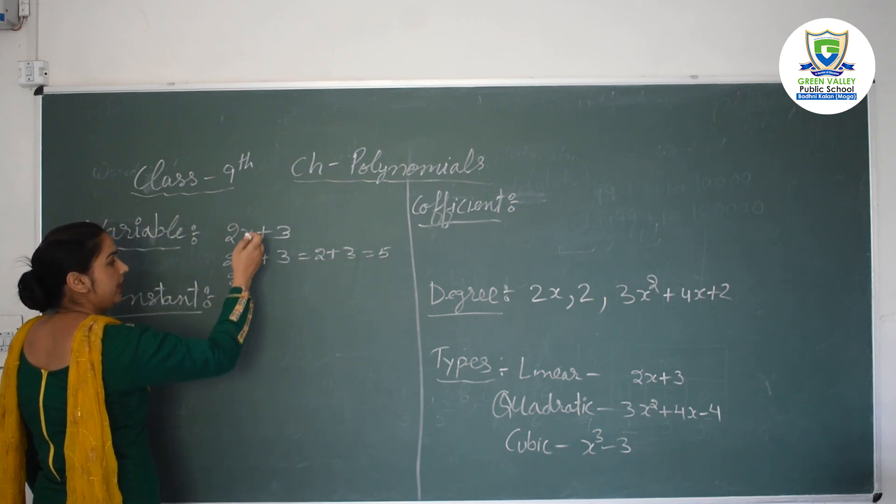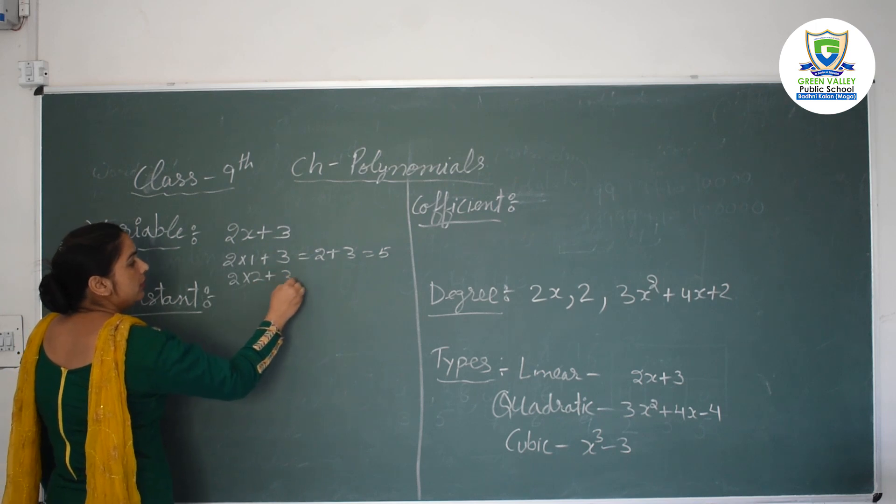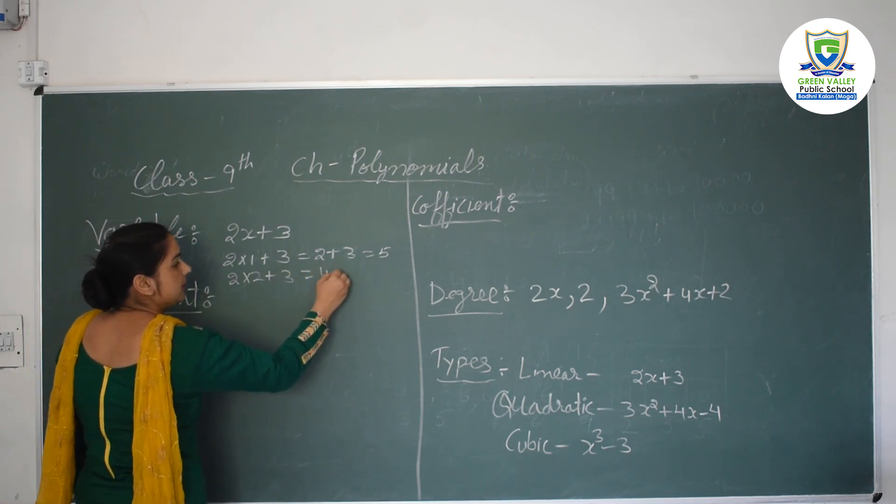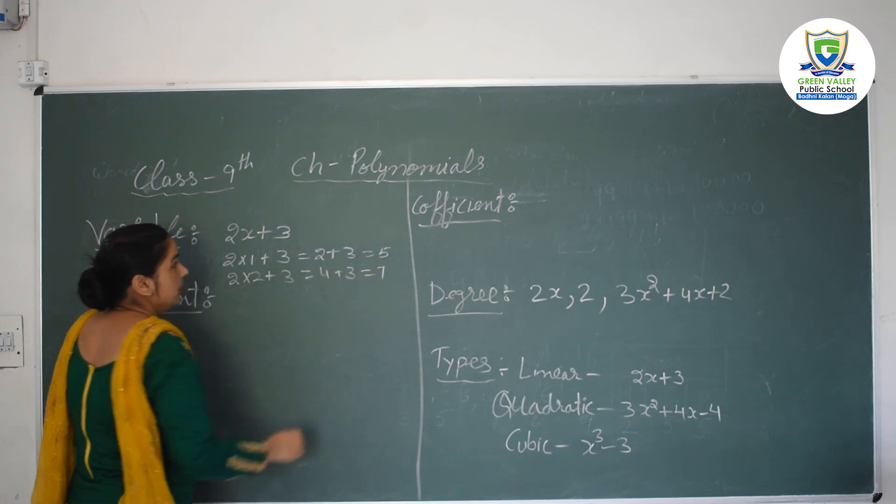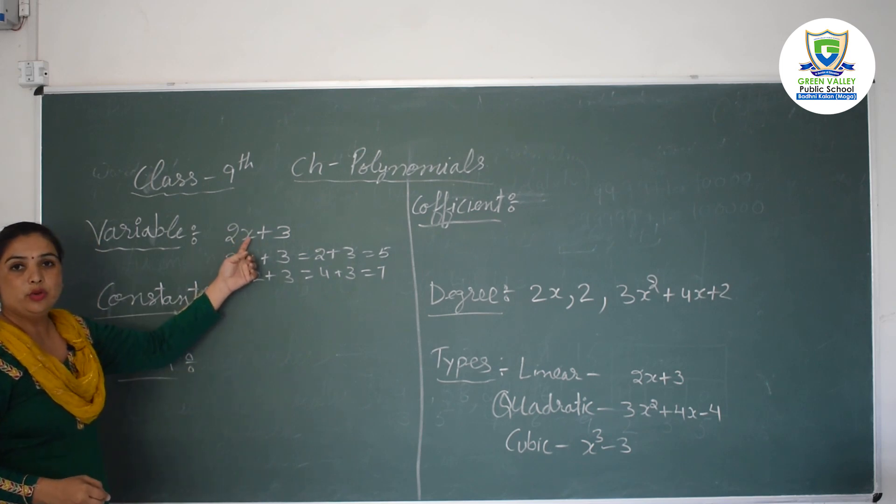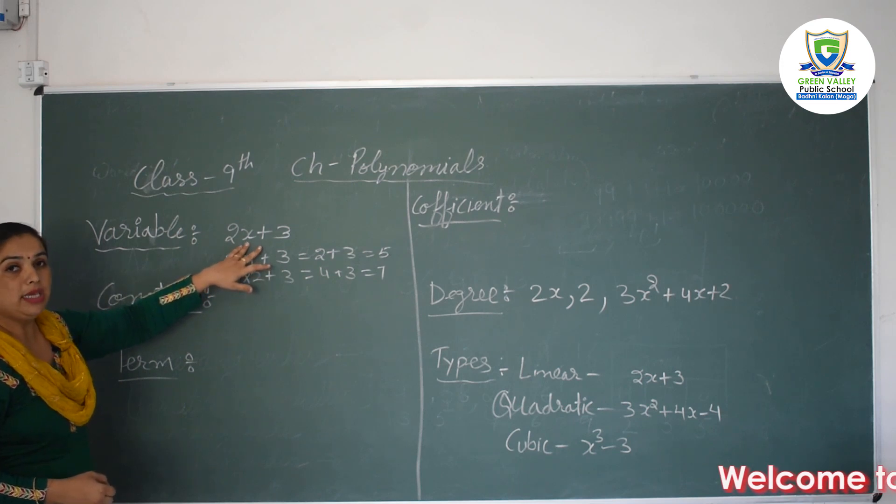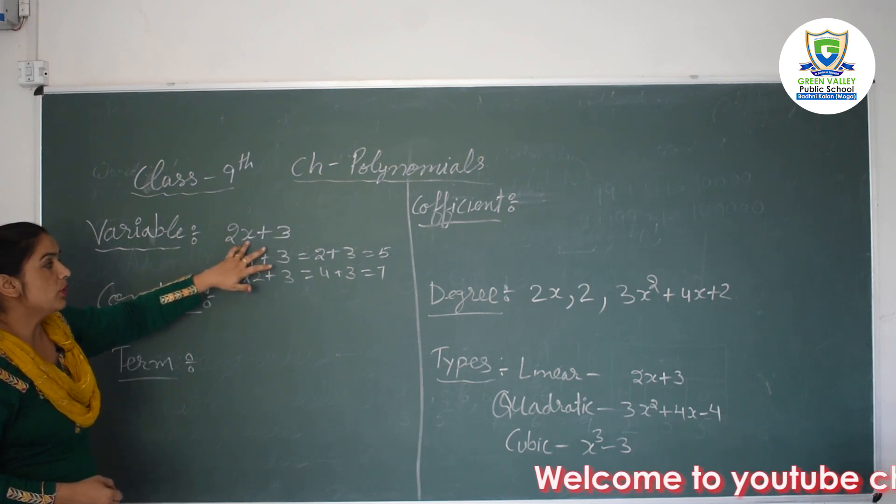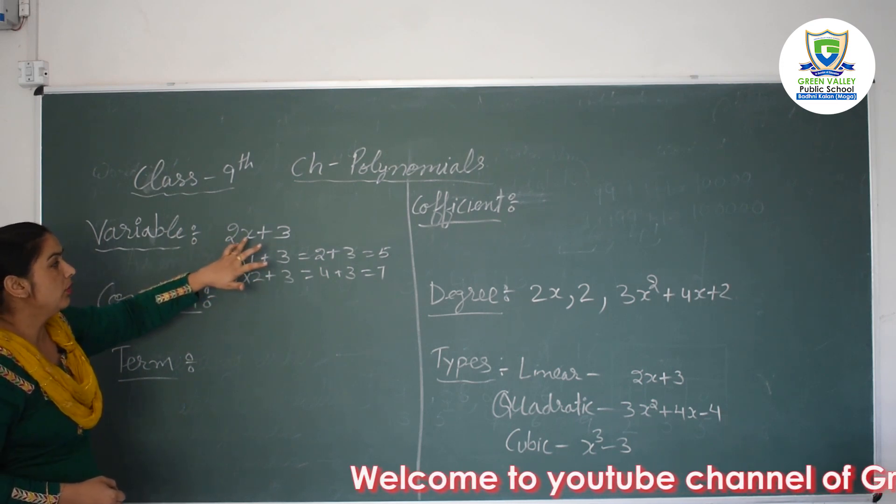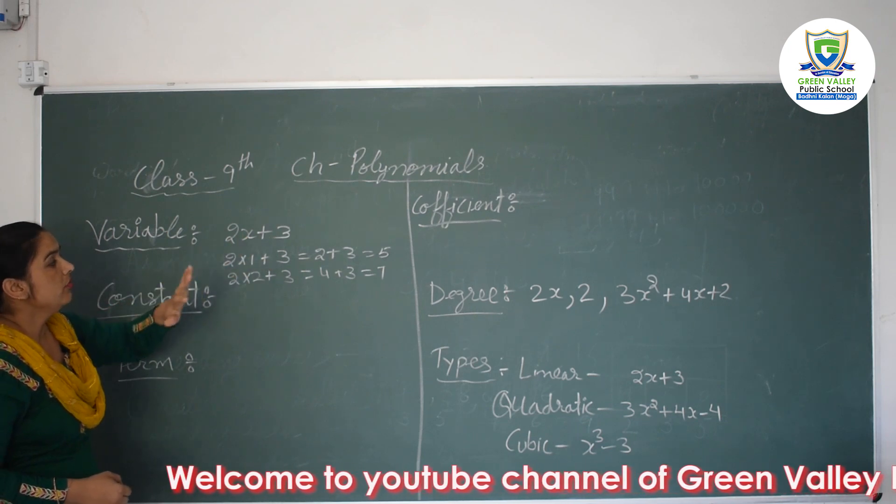If I change its value like 2, then I will get another answer, that is 7. Means for different values of x we have different answers. So that's why we are saying whose value is not the same or fixed, that is called variable.